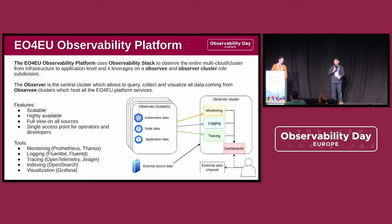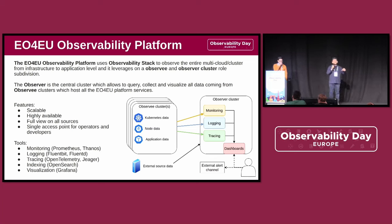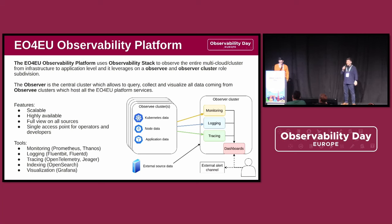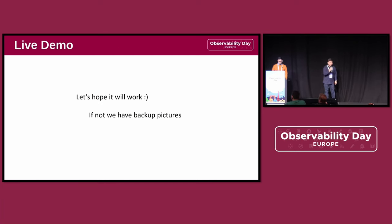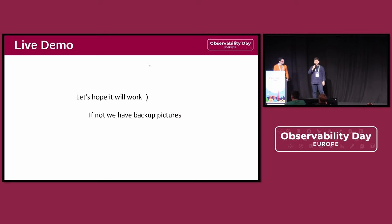This is how we ended up with the EO4EU observability platform — you have the Observee and Observer logic. The Observee clusters run different things, and you have the centralized Observer cluster, which has the monitoring, logging, and tracing data sent by the Observees. This gives us a single access point for operators and developers alike. We actually provisioned a cluster just now to show in the live demo — hope it will work, but if not, we have backup images anyway.